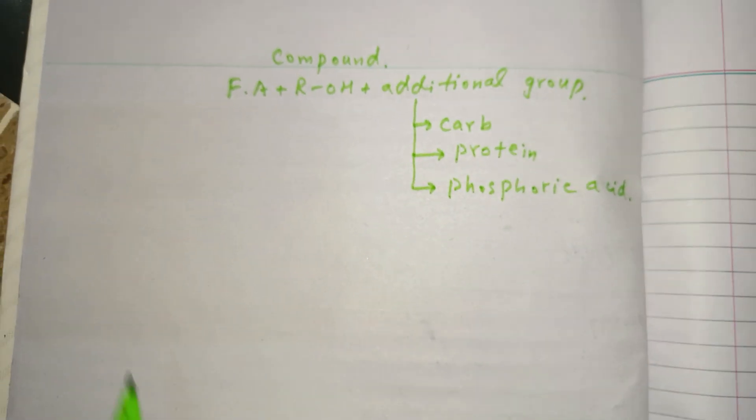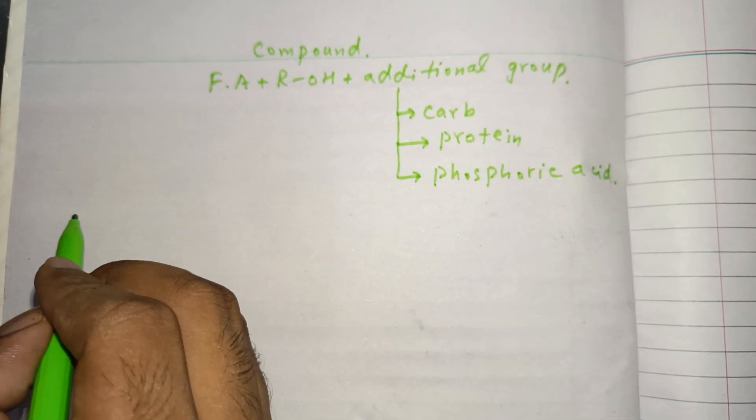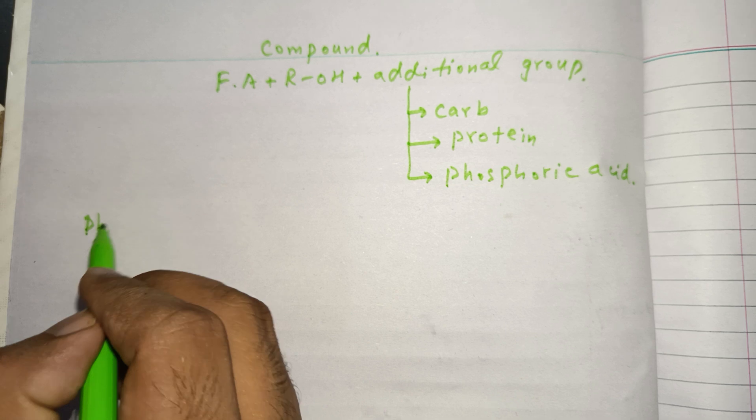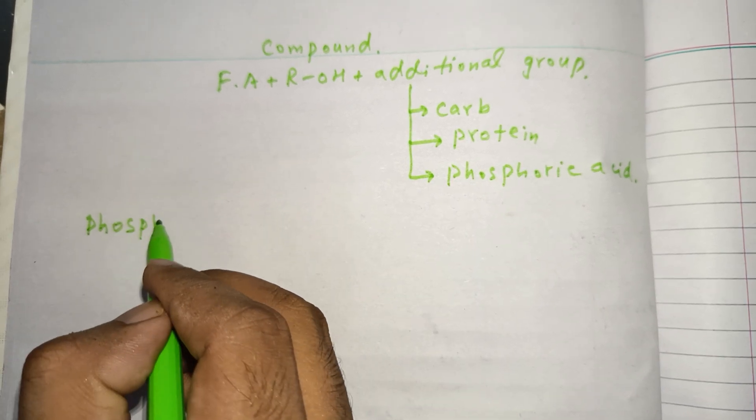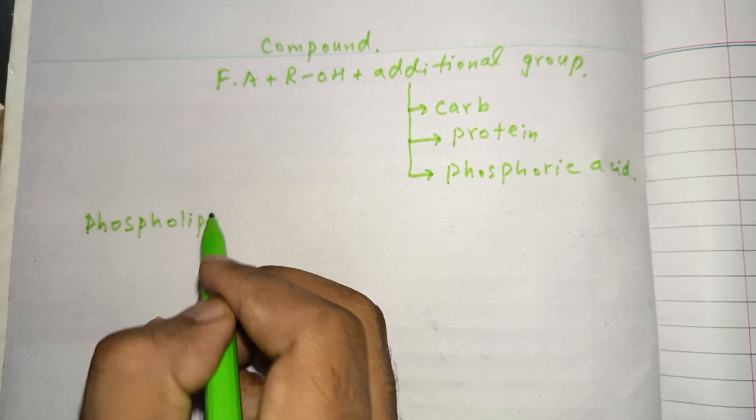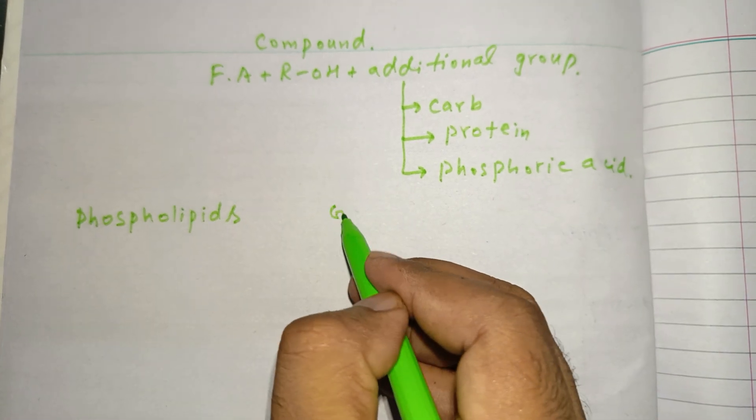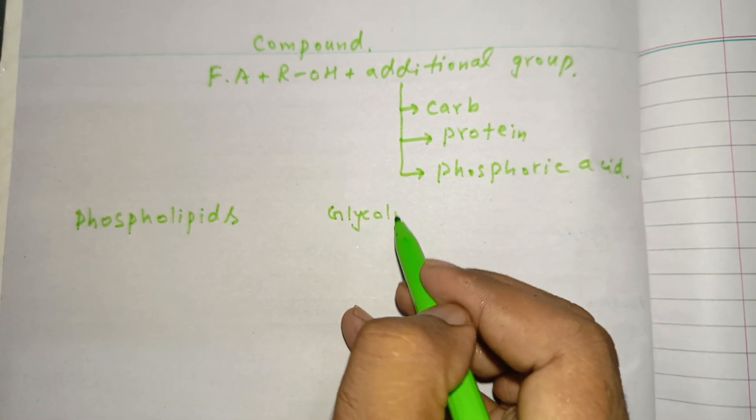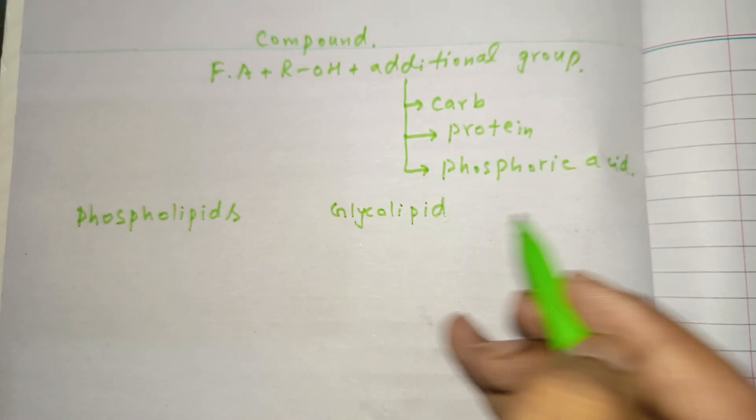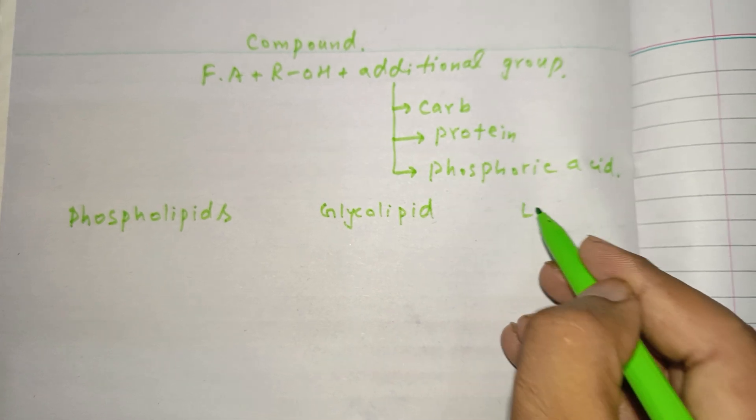There are three examples of compound lipids. Number one is phospholipids. The second one is glycolipid, and the third one is lipoprotein.